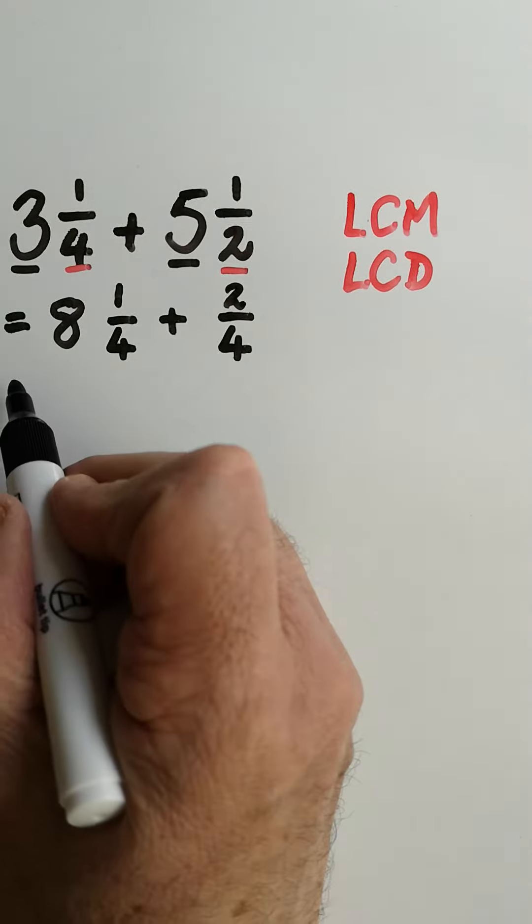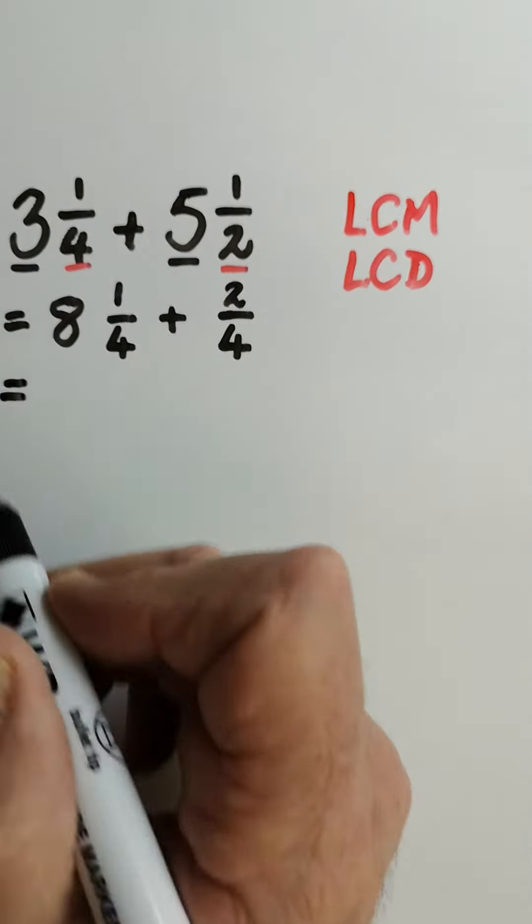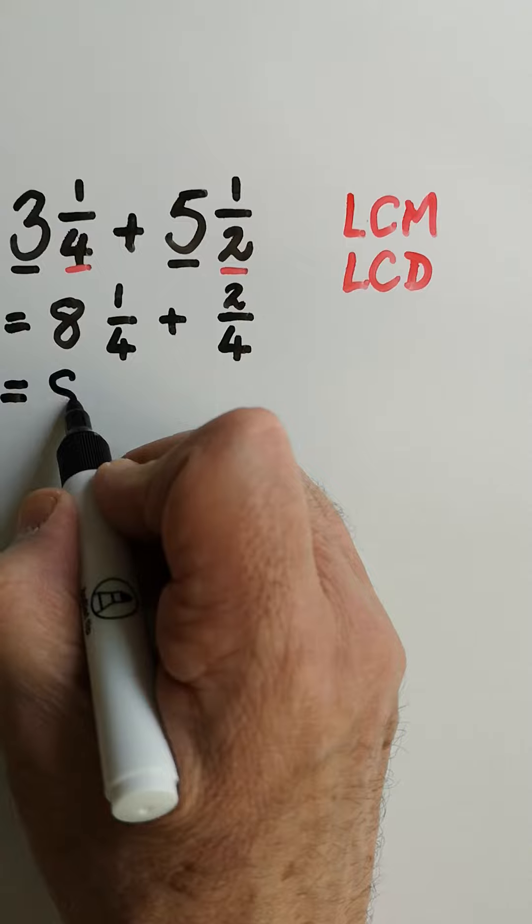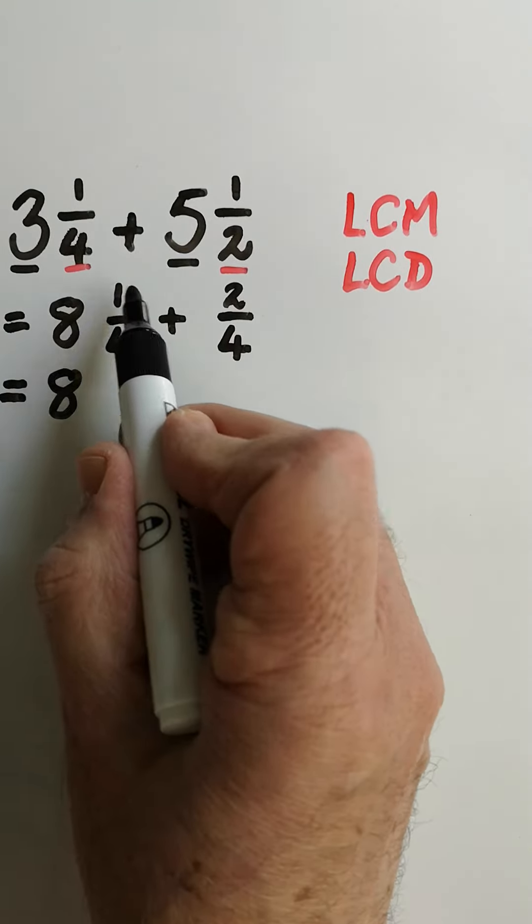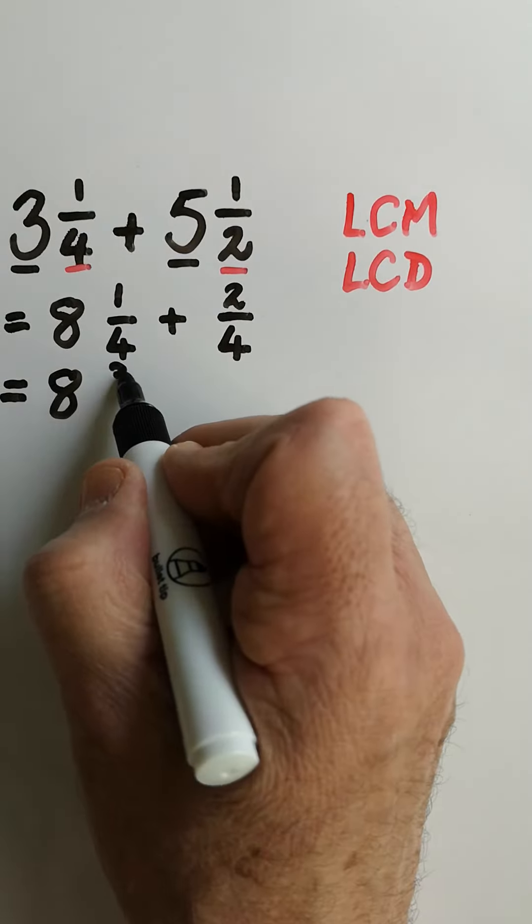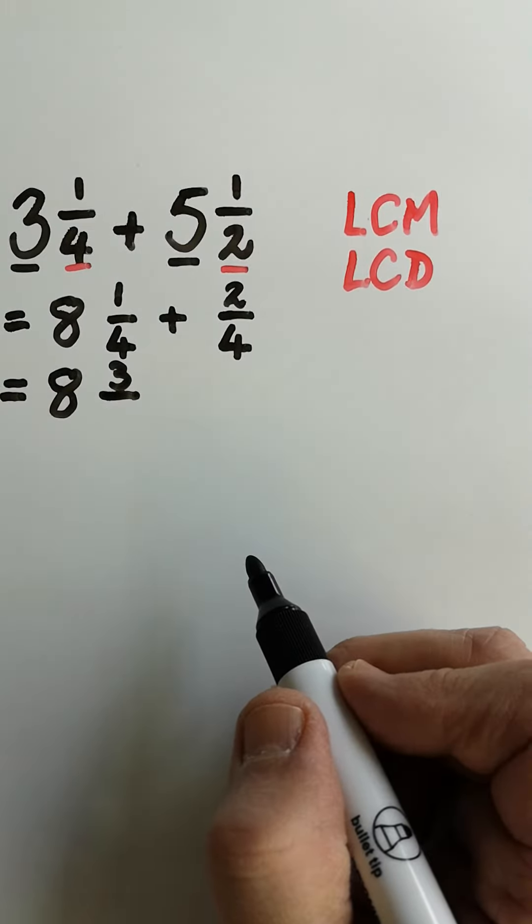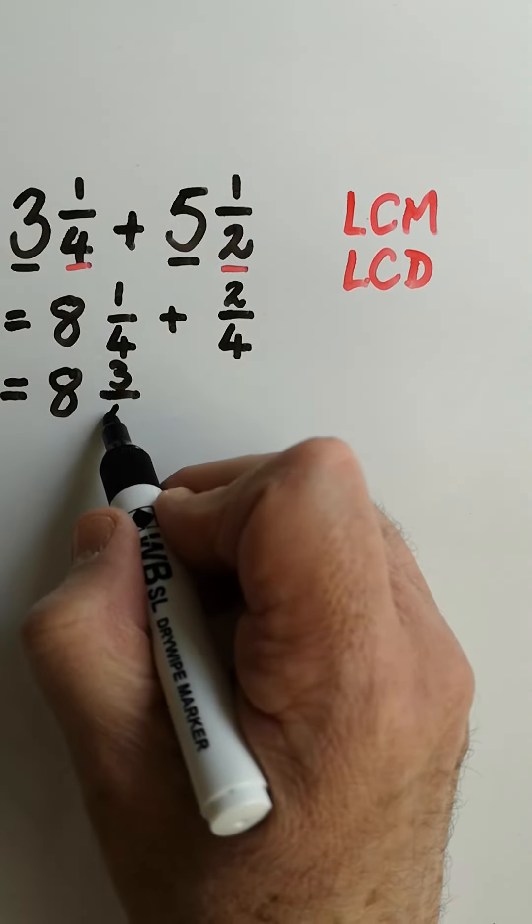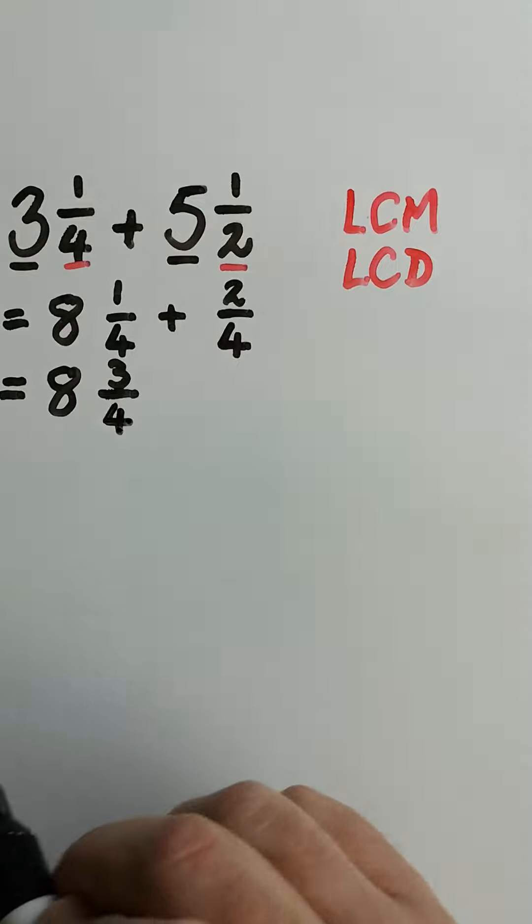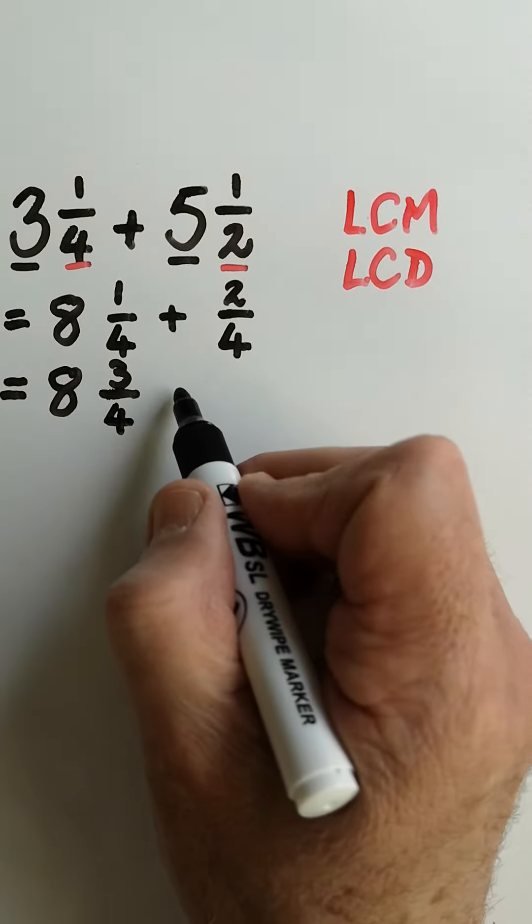Now we can get to our answer a little bit simpler. Bring the eight down, one plus two is three. Now we don't add the fours, they are the same, they stay the same. So my final answer is eight and three quarters.